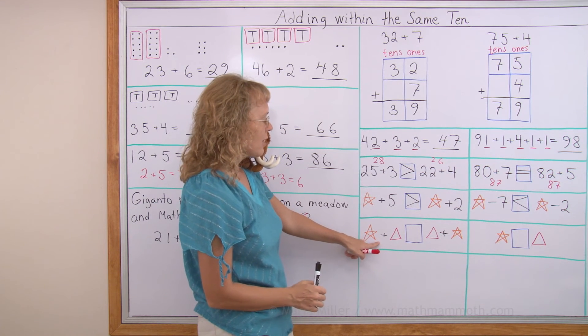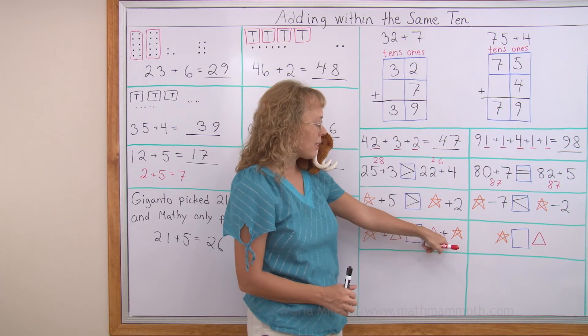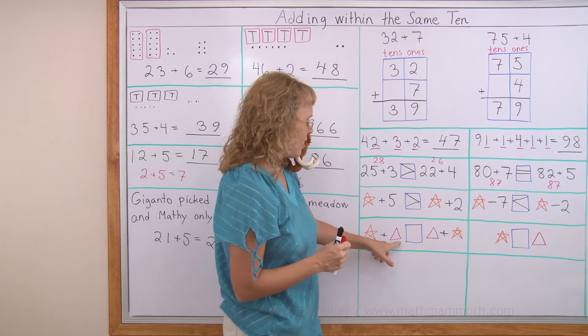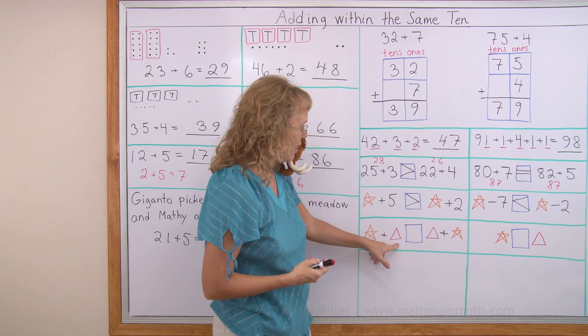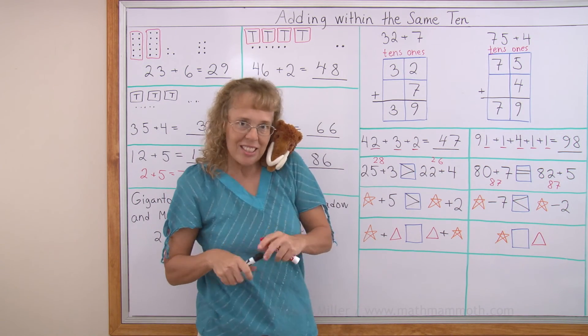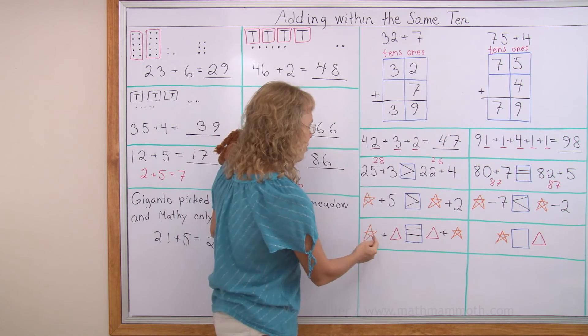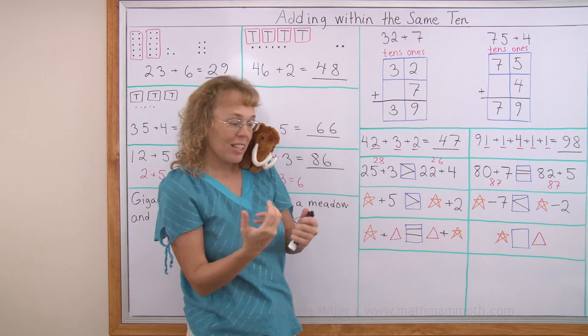Now this one is really a puzzle. Star plus triangle. Triangle plus star. Can you solve that one? Both of those are unknown numbers. The triangle is an unknown number too. Mathie says they are equal. Did you get that too? Yes. They are equal. Because if you add a number and another number. Or you add them in the other order. It's going to be the same result.